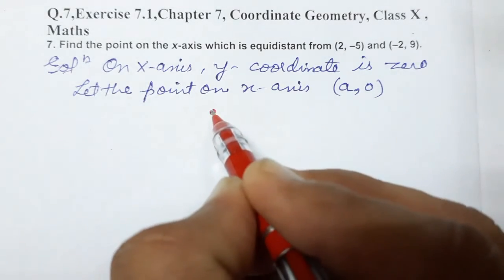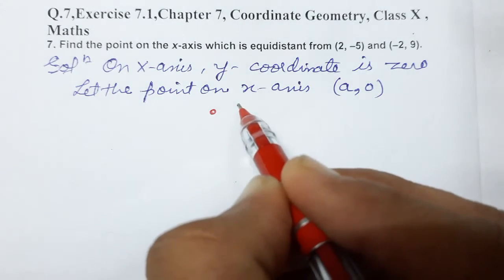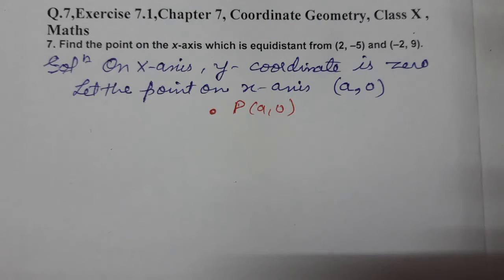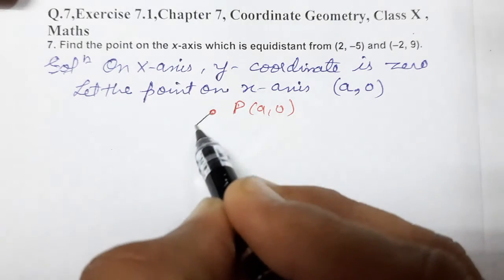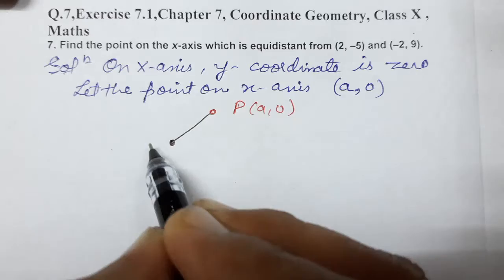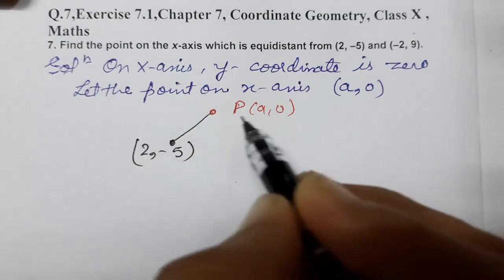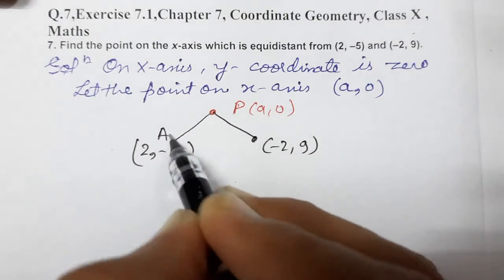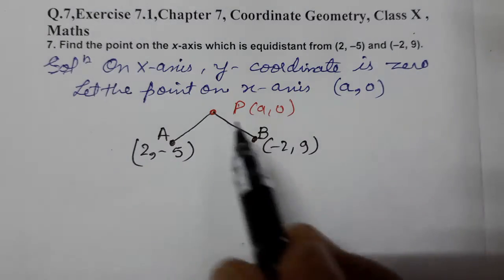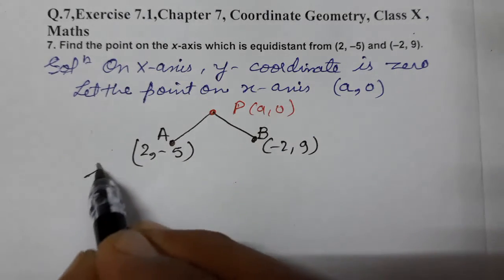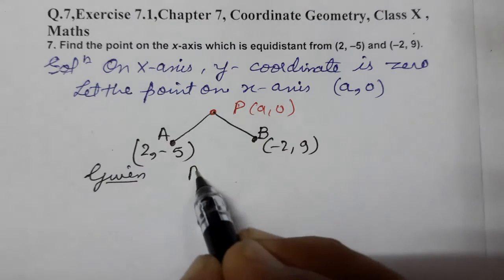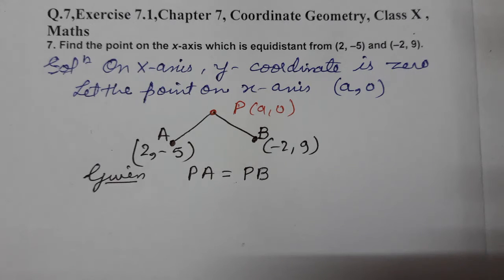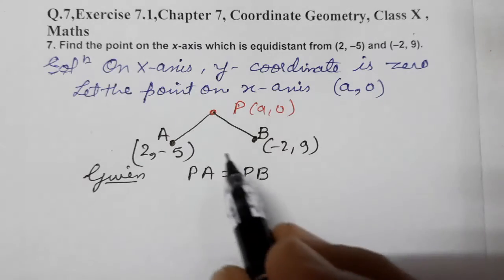Suppose we take this point on the x-axis. The first point is (2, -5) — let's call it P — and the second is (-2, 9) — let's call it B. This point on x-axis we name A. Given: PA = PB, meaning equidistant — equal distance. So we apply the distance formula.